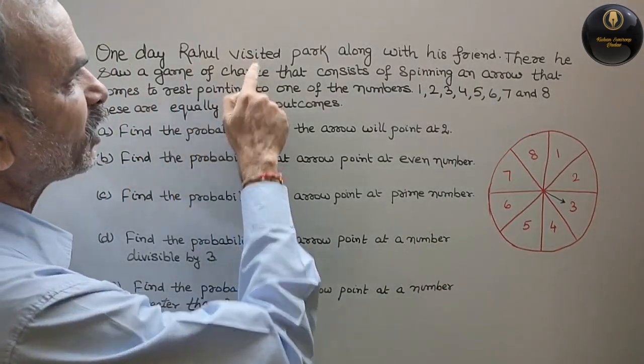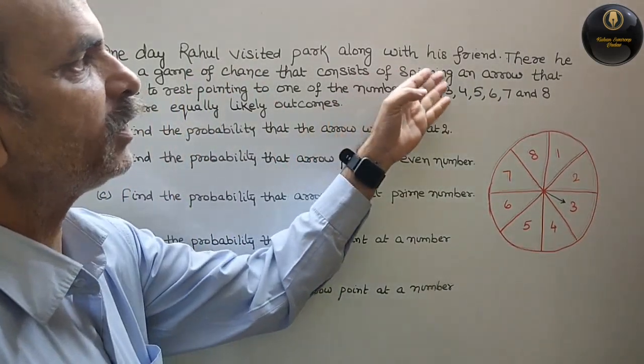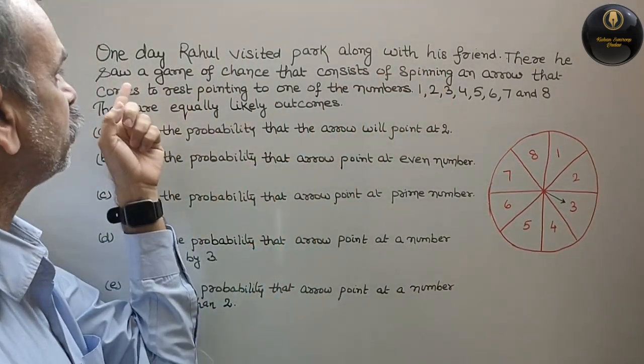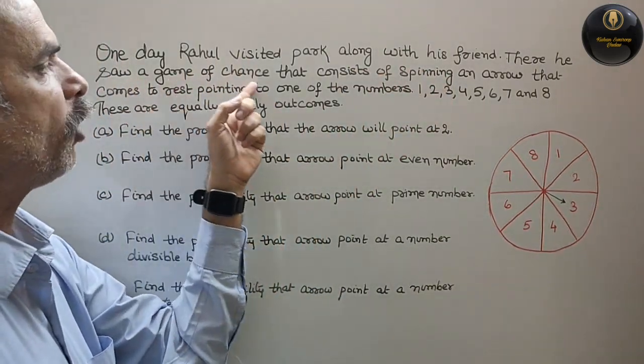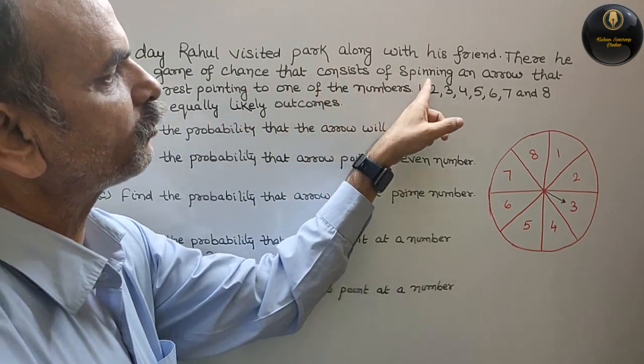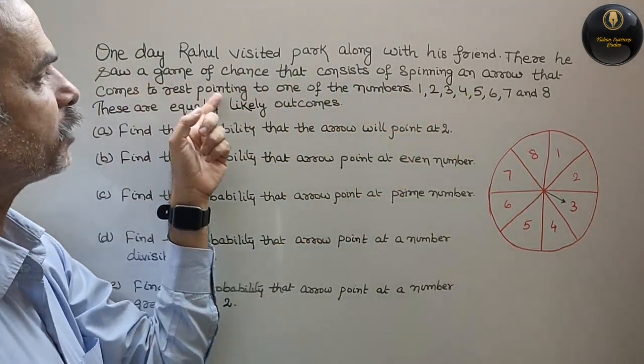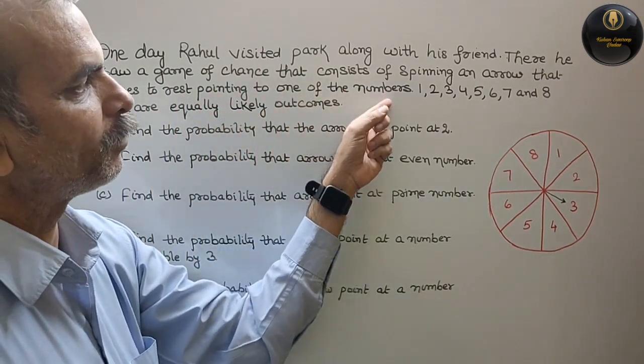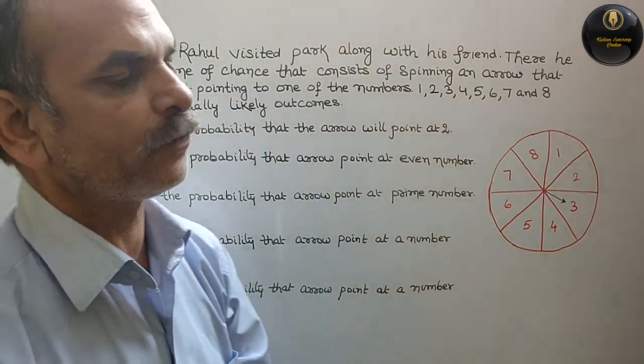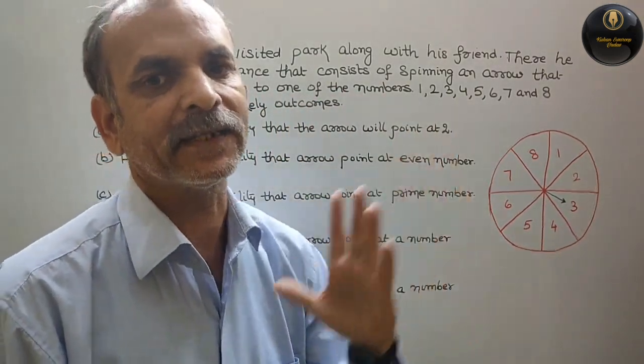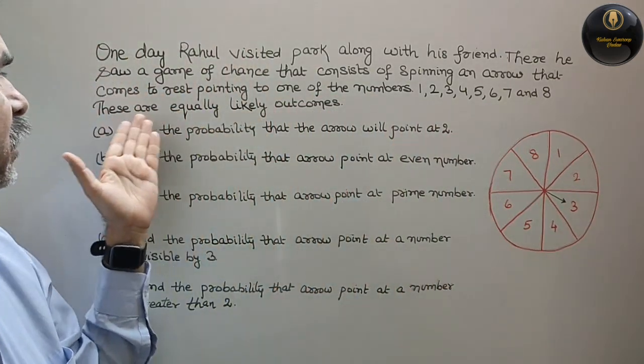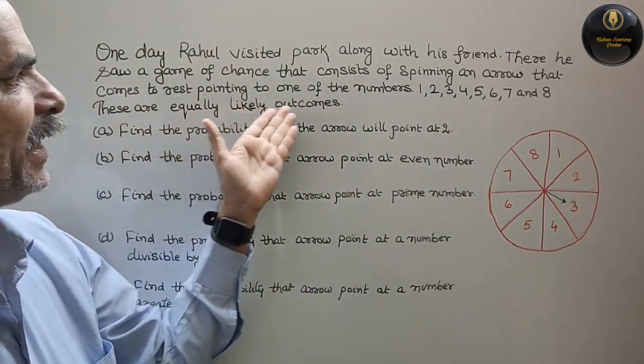One day Rahul visited park along with his friend. There he saw a game of chance that consists of spinning an arrow that comes to rest pointing to one of the numbers 1, 2, 3, 4, 5, 6, 7 and 8. These are equally likely outcomes.